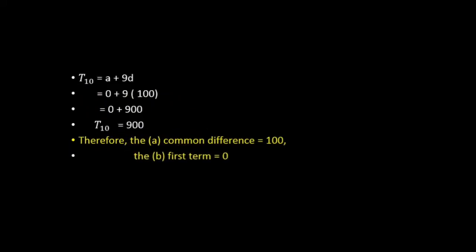Therefore, the common difference is 100, the first term is 0, and the 10th term is 900.